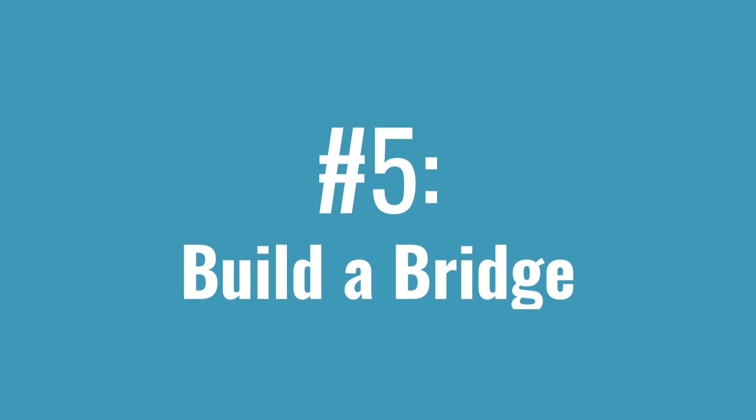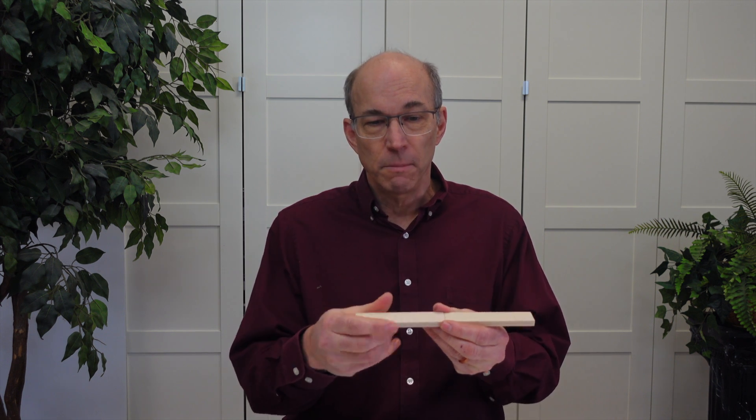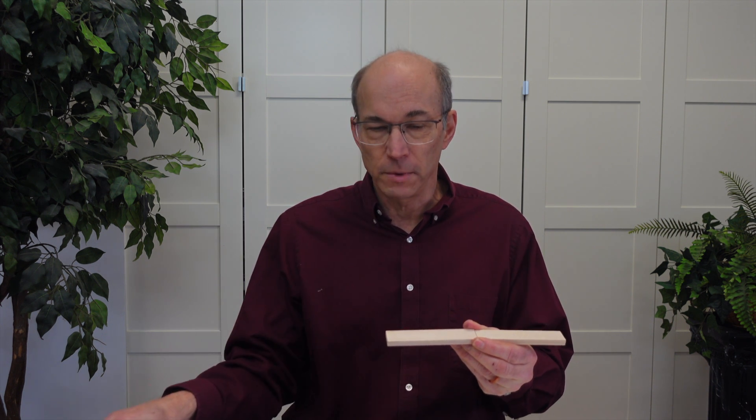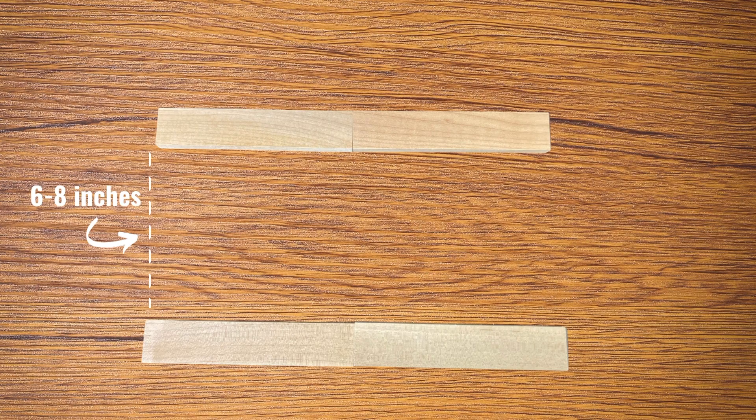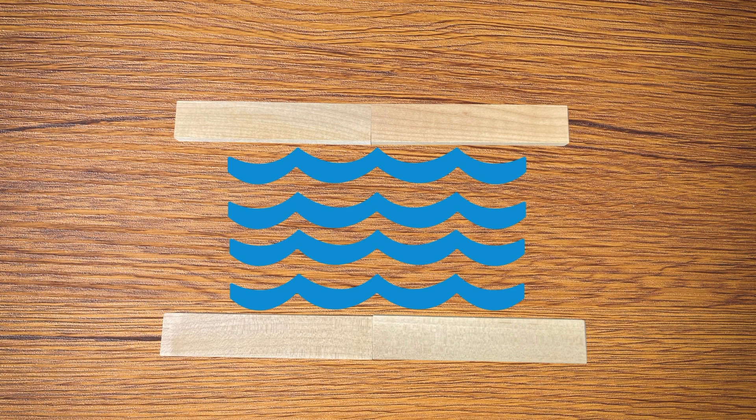Today's challenge starts with a simple bridge challenge where you'll ask your students to build a couple of lines — just lay Kiva planks out in a line, then make a second line parallel to that, about six to eight inches apart. Once you have that built, we'll imagine the space between those lines is a river, and we're going to build a bridge over that river. The bridge cannot be touching the banks of the river.